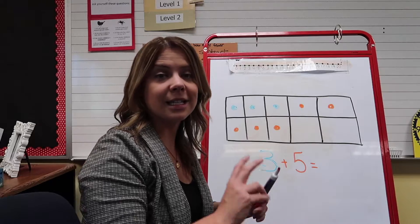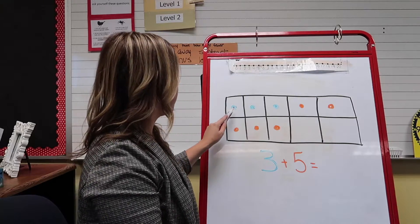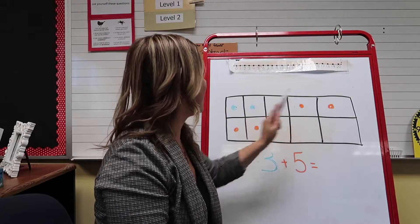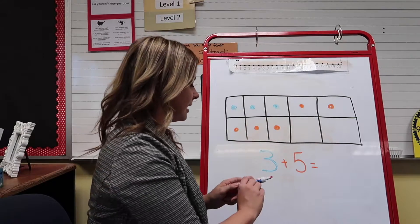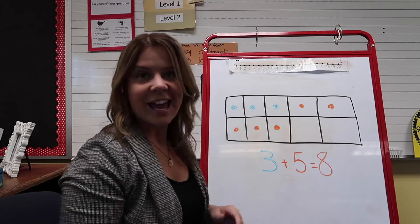So now we count all the dots up to see what 3 plus 5 is. Ready? 1, 2, 3, 4, 5, 6, 7, 8. The answer is 8.